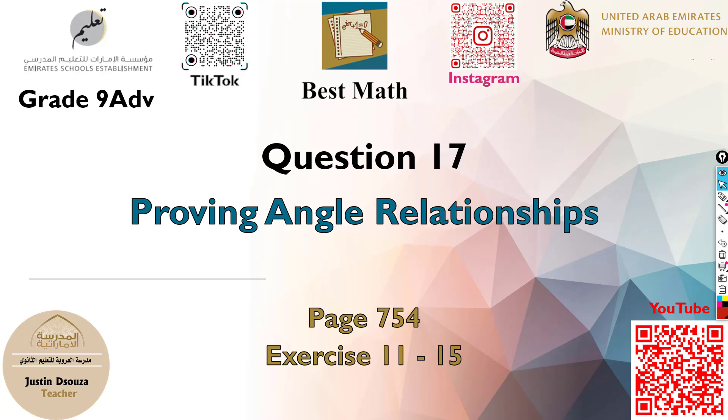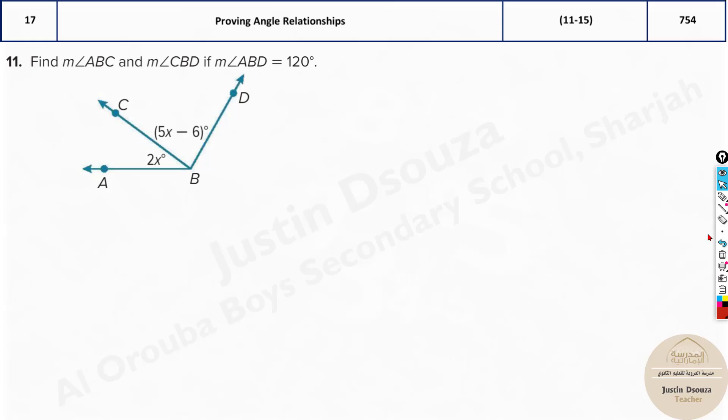Question 17 is about proving angle relationships. This is one of the easy, simple topics.